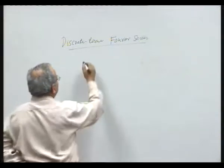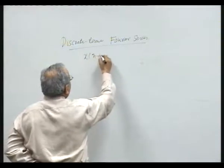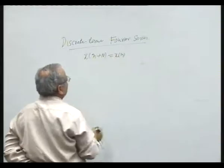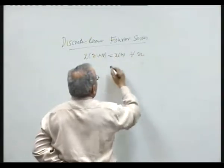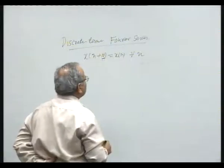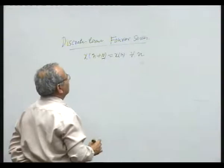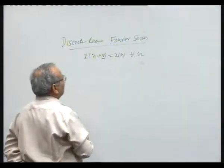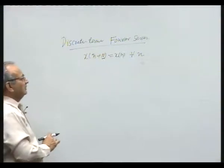If x[n] is a periodic signal with period N, then x[n] is a periodic signal expression for all n, and N is the lowest positive integer which satisfies this relation. If N is the lowest positive integer which satisfies this relation, then this capital N is called its period.